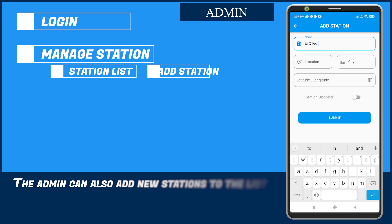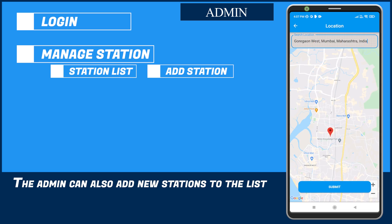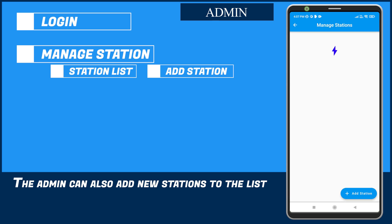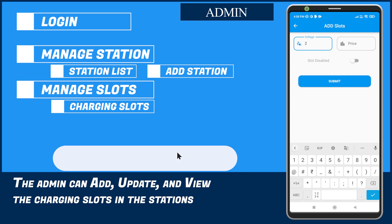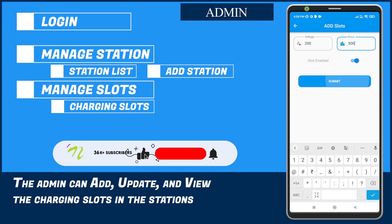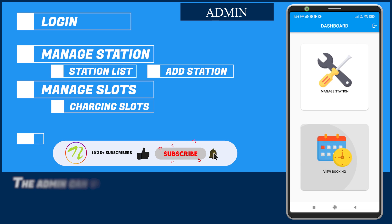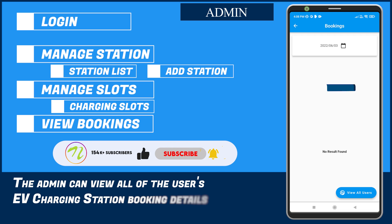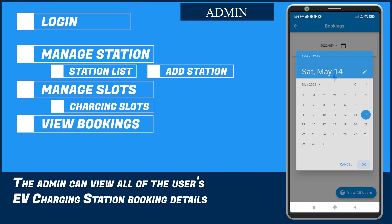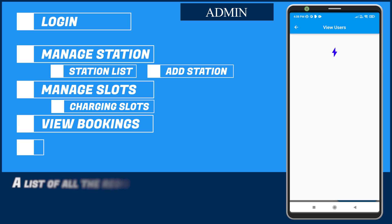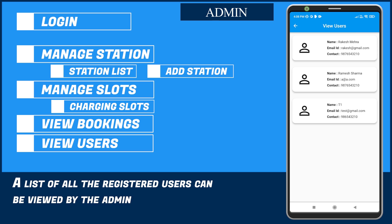The admin can also add new stations to the list. The admin can add, update, and view the charging slots in the stations. The admin can view all the user's EV charging station booking details. A list of all registered users can be viewed by the admin.